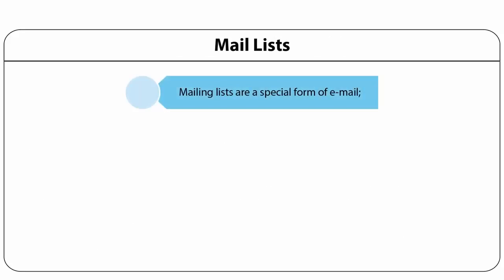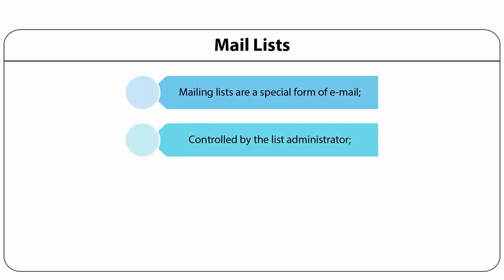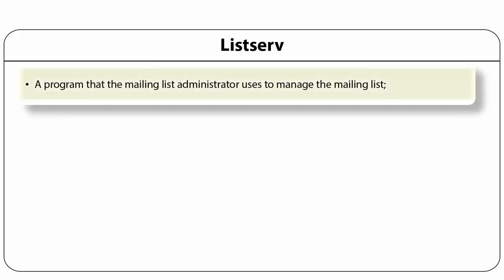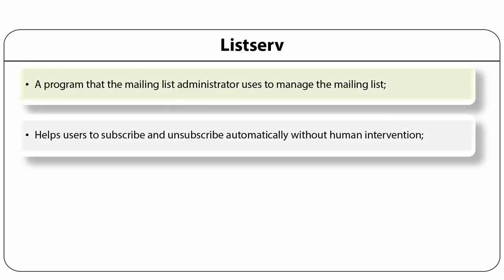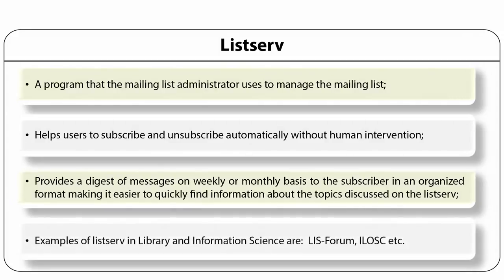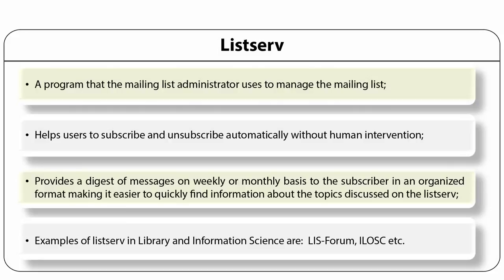Mail lists are a special form of email. They are controlled by the list administrator who monitors and ensures the mail list is working. It runs on a machine called list server or listserv. Messages can be sent to the list server which sends a copy of the message to everyone who has subscribed to a given listserv, directly to the personal mailbox. Listserv is a program that the mailing list administrator uses to manage the mailing list. It helps users to subscribe and unsubscribe automatically without human intervention. Listserv also provides a digest of messages on weekly or monthly basis in an organized format. Examples of listserv in library and information science are LIS forum, ILO-SE, etc.